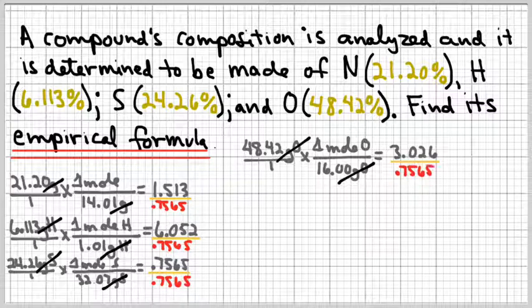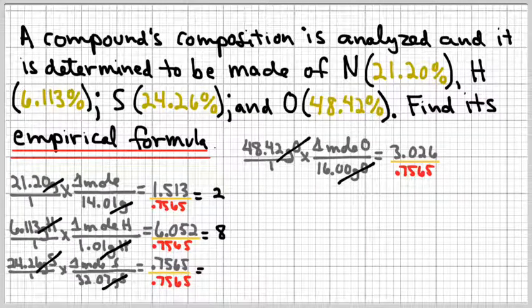So I do that to all four of my components. I go ahead and do the division and I'm hoping that these are going to come out to whole numbers. And when I do that, I get 2 for nitrogen, 8 for hydrogen, 1 for sulfur, and 4 for oxygen.